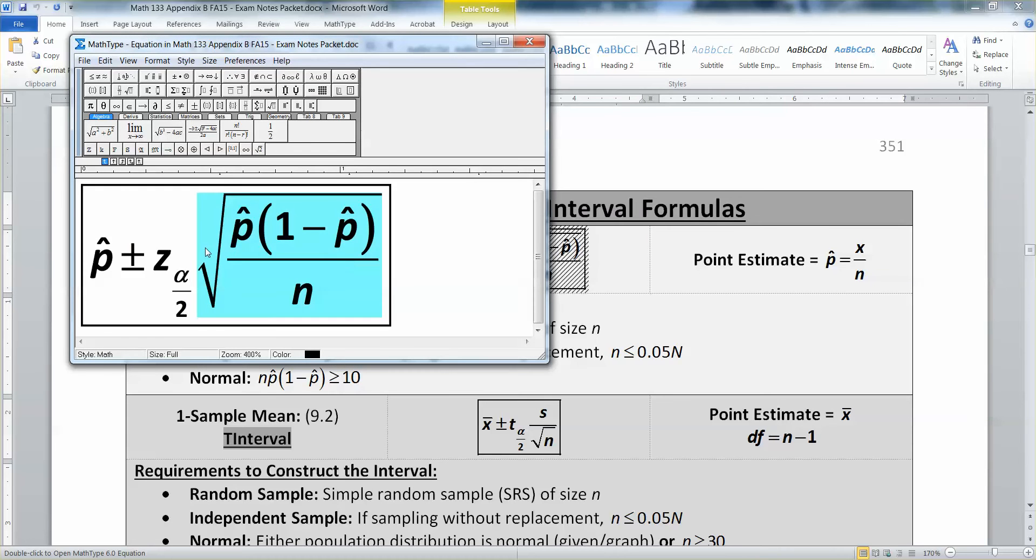And that's because this square root of p hat times 1 minus p hat over n is a basic approximation of sigma from a binomial distribution.